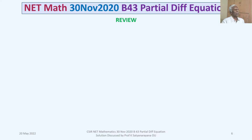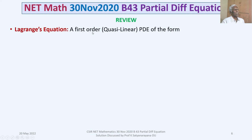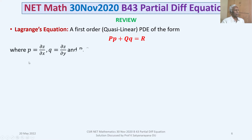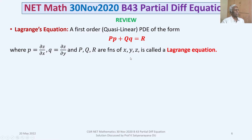We now review our knowledge on Lagrange's first-order Quasilinear Partial Differential Equation. A first-order Quasilinear PDE of the form Pp + Qq = R, where z is the dependent variable, x and y are independent variables, p = ∂z/∂x, q = ∂z/∂y, and P, Q, R are functions of x, y, z, is called Lagrange's Equation.